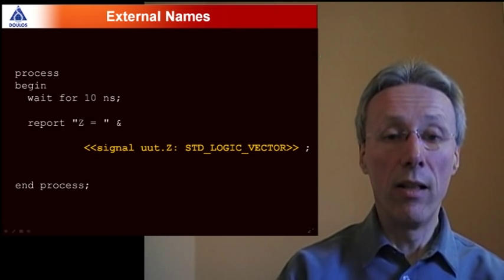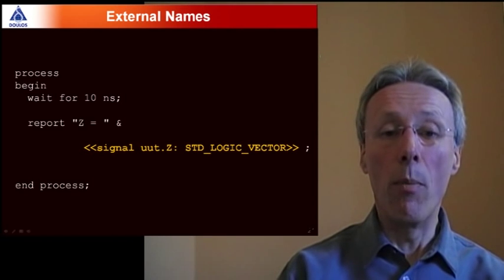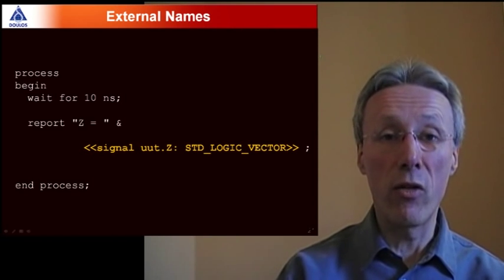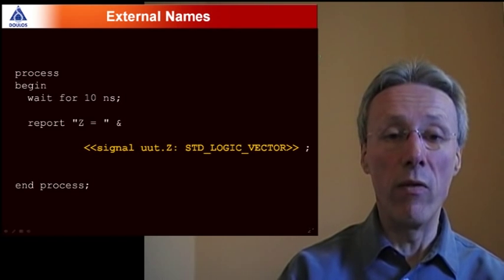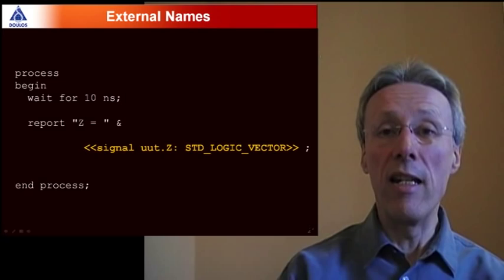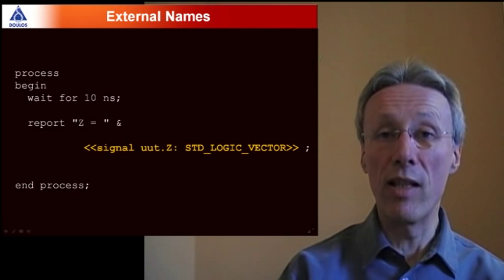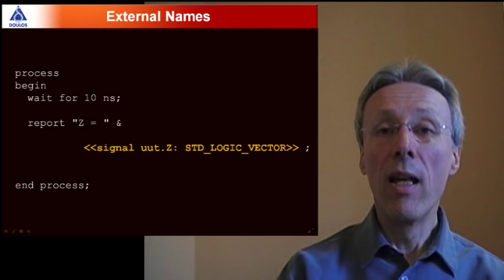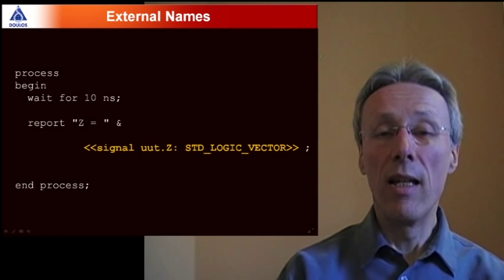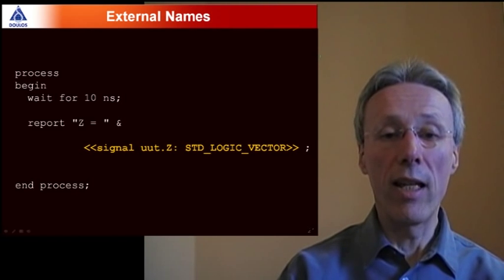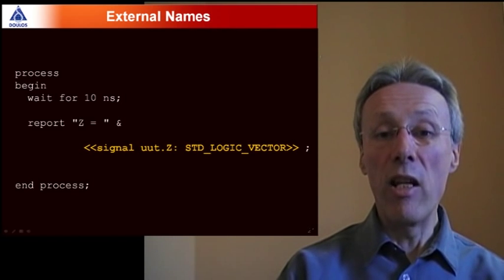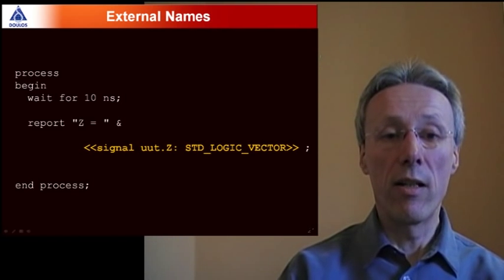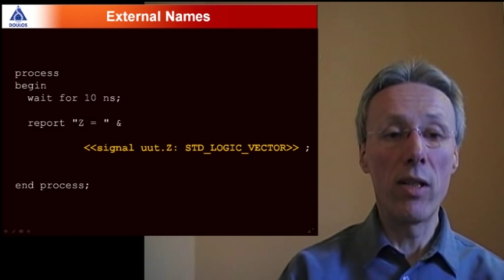Because this is VHDL and we've got strong checking in the compiler we've got to do a little bit of typing to construct this external name. So as well as just writing UUT.Z as you might do in Verilog we also have to indicate that we're making a reference to a signal. It's a type standard logic vector and then you enclose the whole thing in these two double angle brackets.